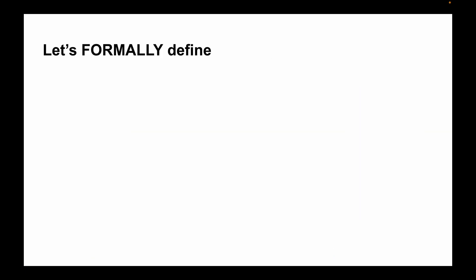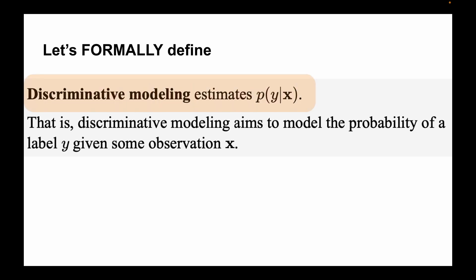Now let's formally define discriminative modeling as well as generative modeling. Discriminative modeling estimates the probability of Y given X. That is, discriminative modeling aims to model the probability of a label Y given some observation X. Now let's look into the definition of generative modeling.